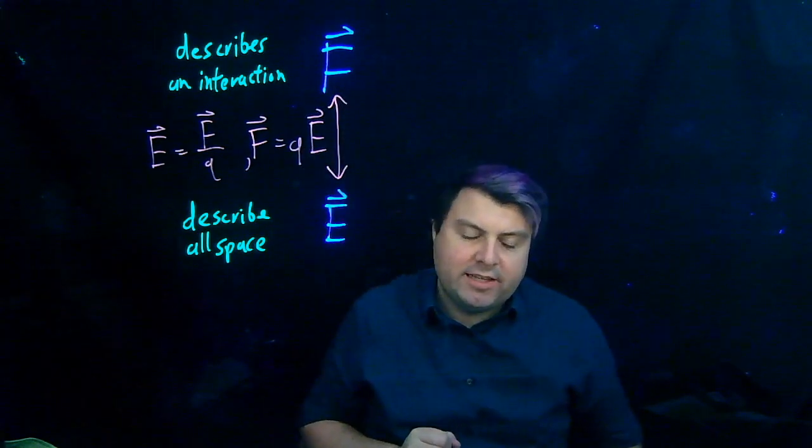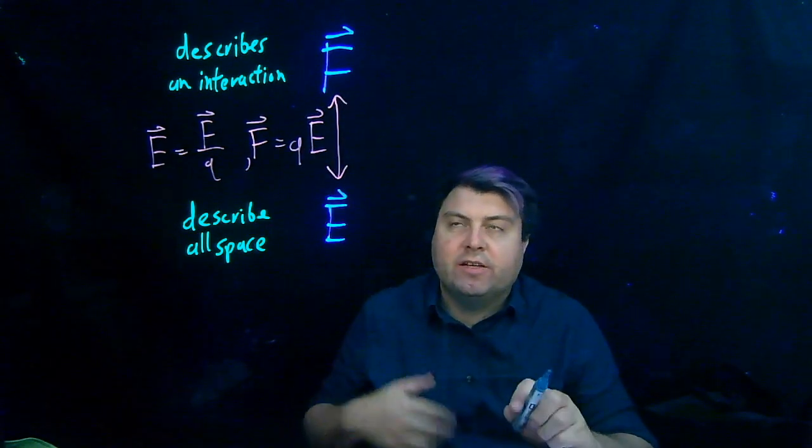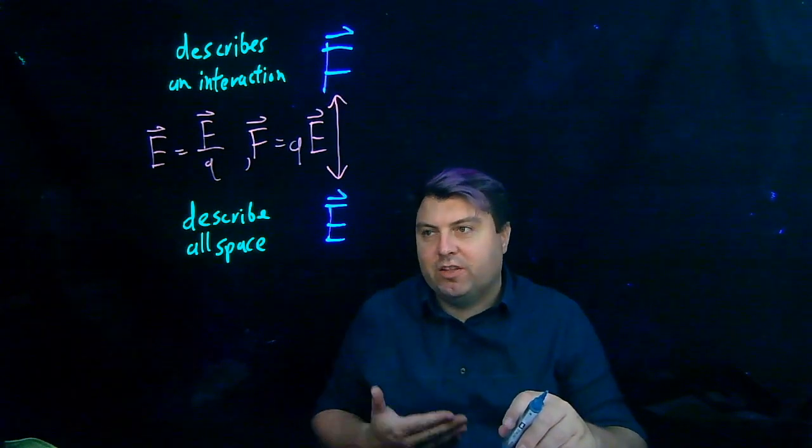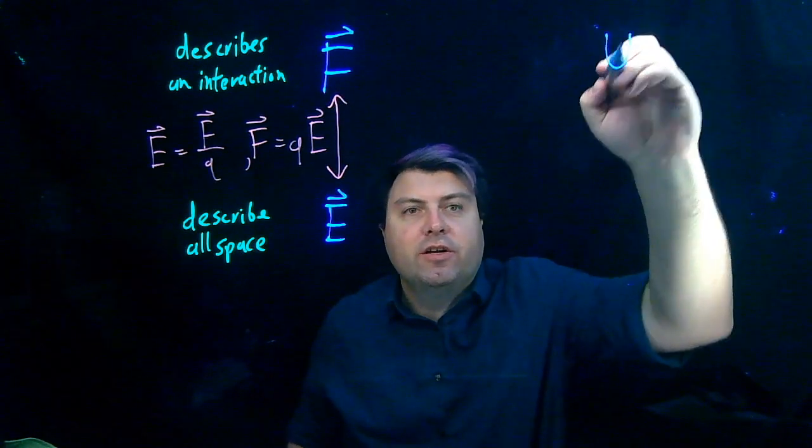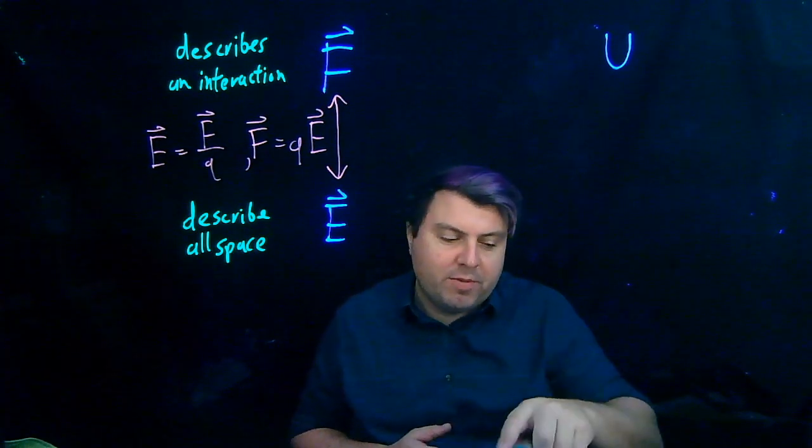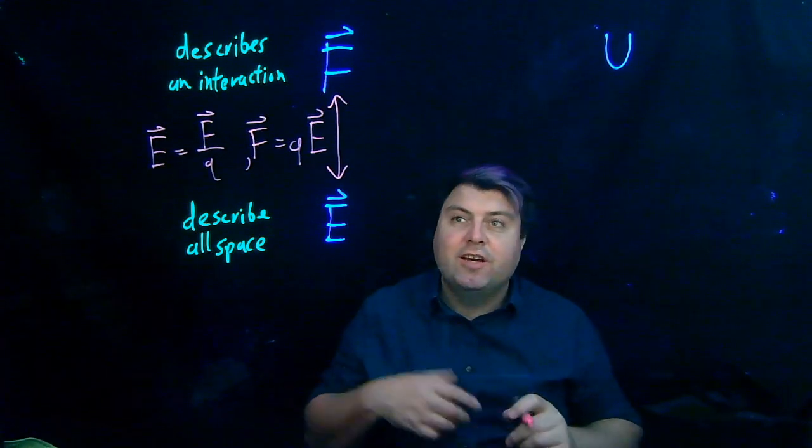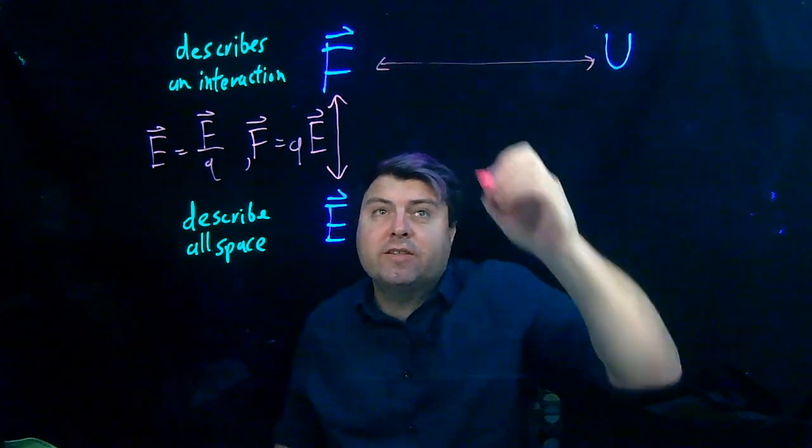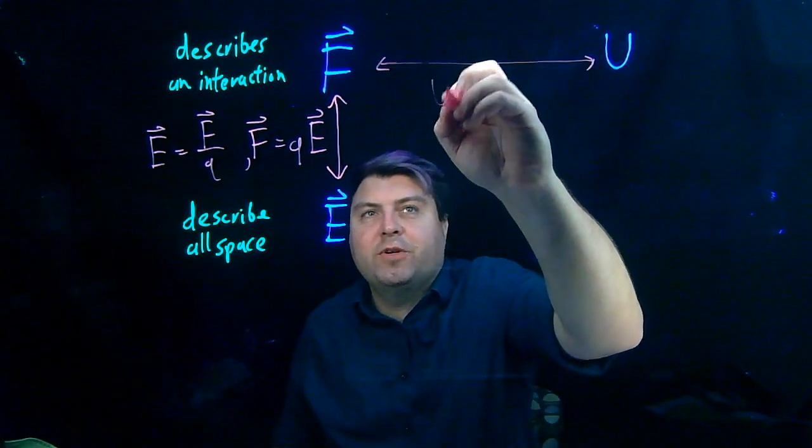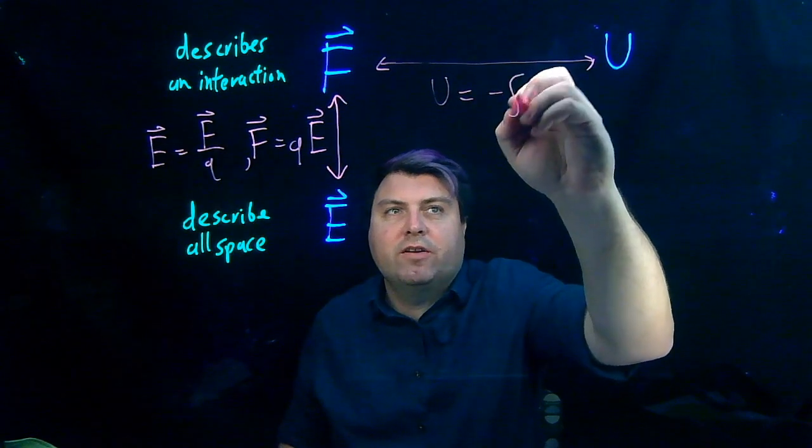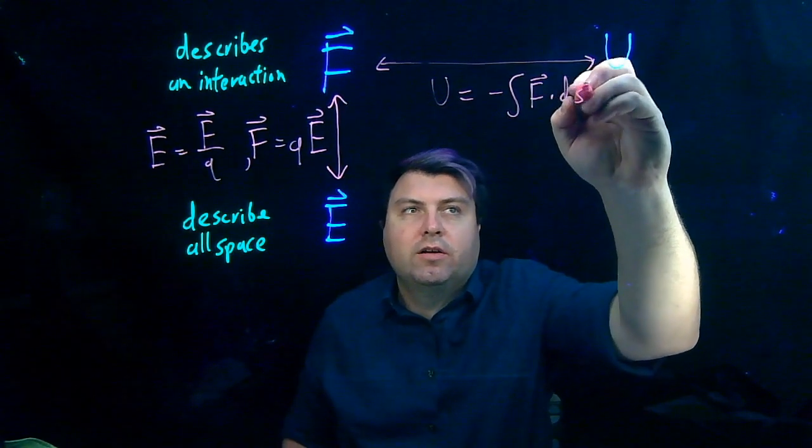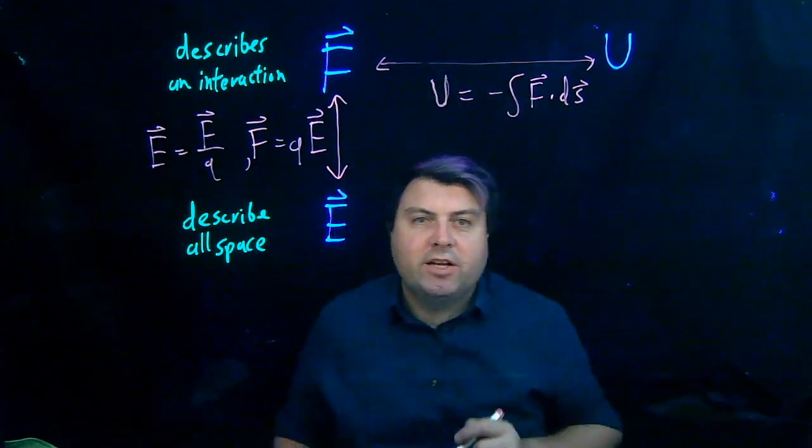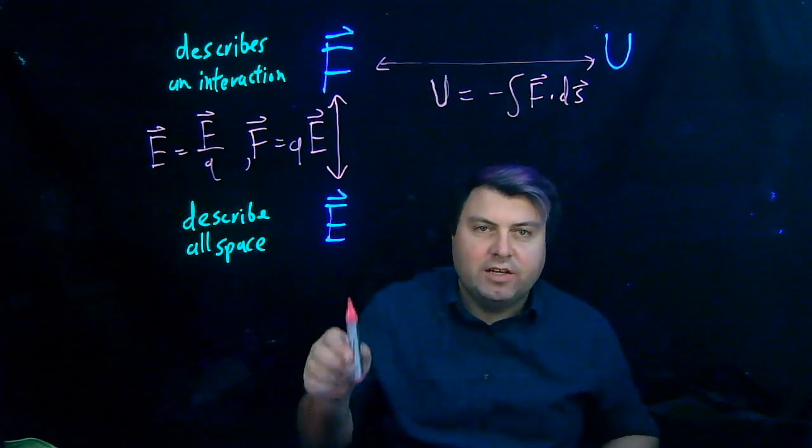In that first class of mechanics, we decided there was another way of looking at things that was sometimes more convenient than forces. It was called energy. We've just recently learned about potential energy for electricity, but we learned it also in mechanics. We learned that our potential energy was equal to negative integral F dot dS. So we have a connection between our potential energy and our force in this way.